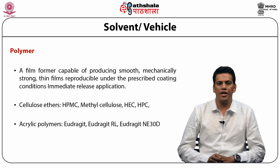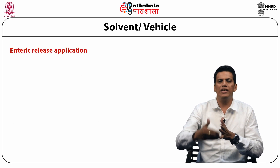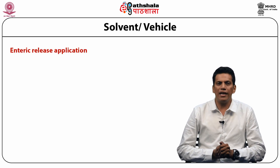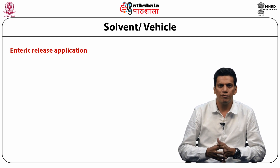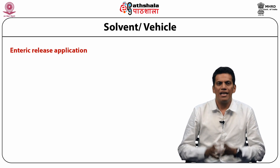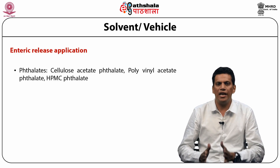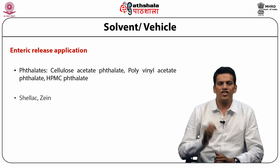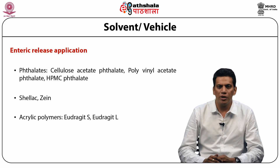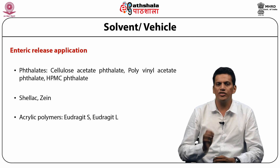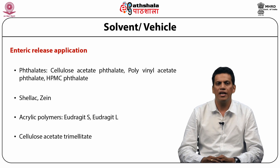These polymeric films are also used for enteric release applications — meaning releasing the drug into the intestine, bypassing the stomach. Commonly employed enteric polymers are phthalates such as cellulose acetate phthalate, polyvinyl acetate phthalate, and HPMC phthalate. Shellac and zein are obtained from natural sources. Some modified acrylic polymers, such as Eudragit S and Eudragit L, are also used. A very new polymer in this field is cellulose acetate trimellitate.